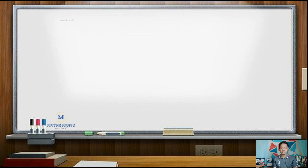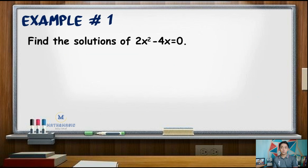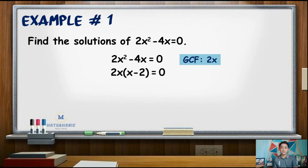For our first example, find the solutions of 2x squared minus 4x equals zero. First, make sure that the equation is equated to zero. Next, factor the quadratic expression. Since the binomial 2x squared minus 4x has a greatest common factor of 2x, dividing by 2x gives the other factor of x minus 2. This brings our equation to 2x times quantity x minus 2 equals 0.